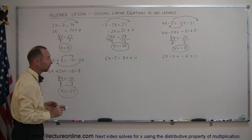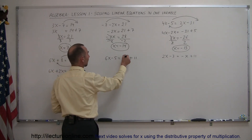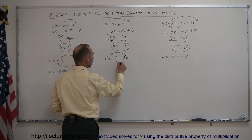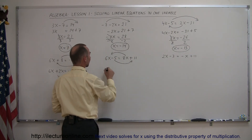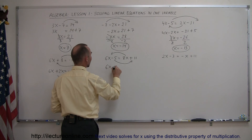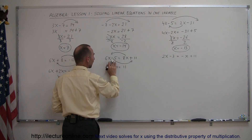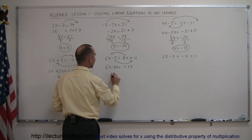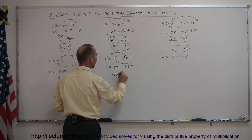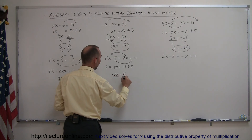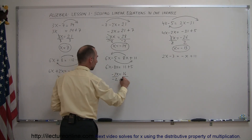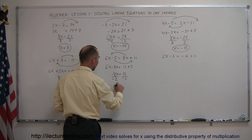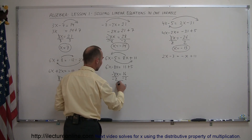Our next example: we move all terms with X to the left side and all terms without X to the right. So we have 6X minus 8X equals 11, and the minus 5 becomes plus 5 when it crosses the equal sign. Combining like terms: 6X minus 8X is minus 2X, which equals 11 plus 5 = 16. Dividing both sides by minus 2, that cancels out and X equals minus 8.